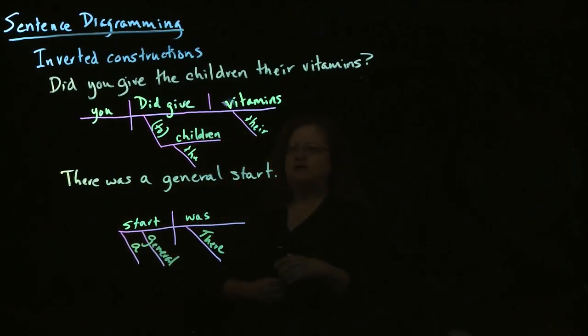So when you have inverted constructions, diagramming is a really good tool to figure those out because you can figure out where these things go in the framework, even if they're not in the normal order that you find them in a sentence.